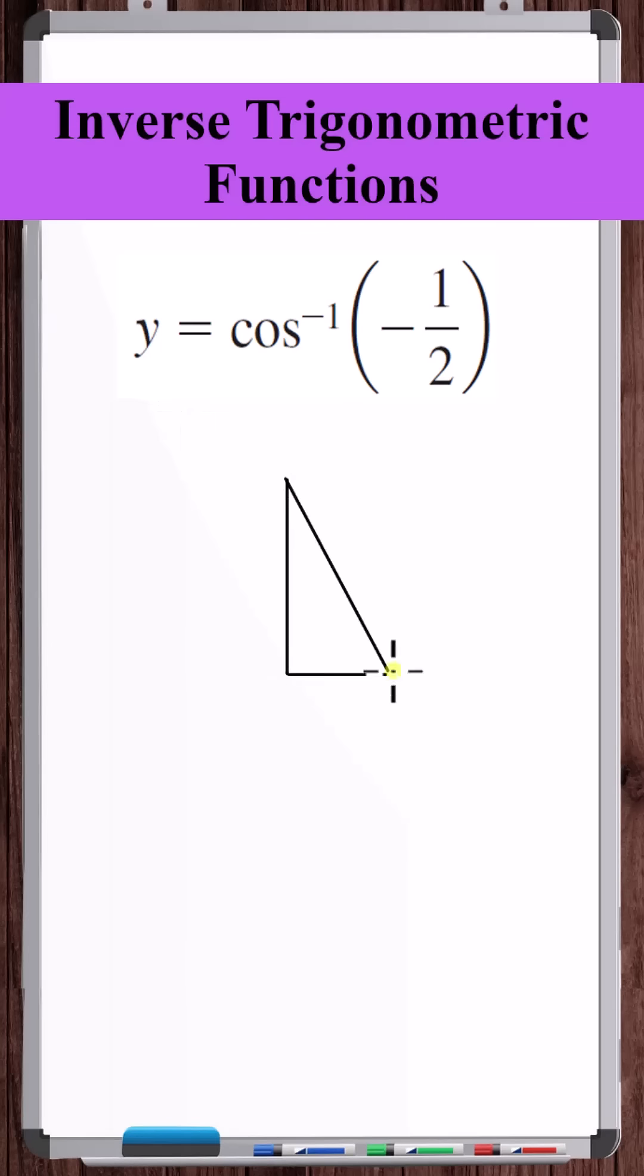Now, if we think about the 30-60-90 triangle, the side length ratios are 1, root 3, and 2. The cosine of 60 is one-half.